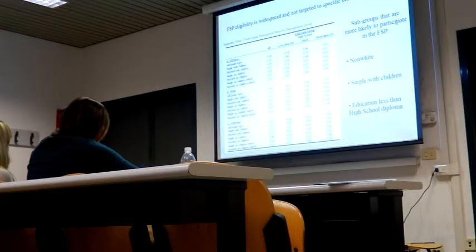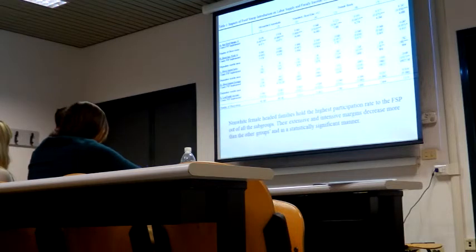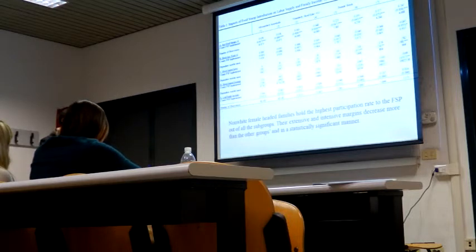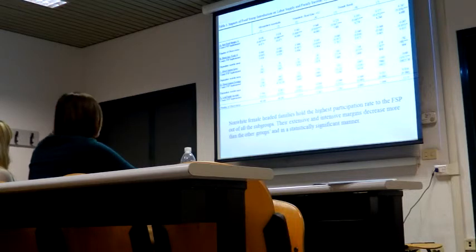Building on these results, we have a second result: non-white female-headed families have the highest participation rate in the food stamp program. Out of all the subgroups, other than having the highest participation rate, they also have the most hours decreased of work. They also work less. Unemployment rises and hours are lower.